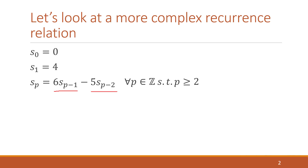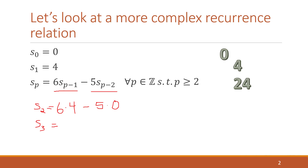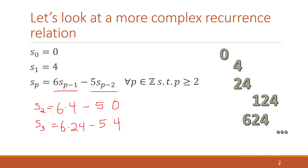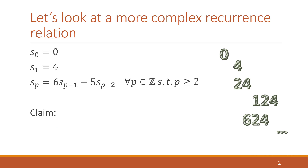If you work out the problems in this recurrence relation, we first have zero and then four from the base cases. Then for s(2), we have 6 times s(1), which is 6 times 4, minus 5 times s(0), which is zero, giving us 24. For s(3), we get 6 times 24 minus 5 times 4, which gives 124. The next one is 624, and so on — this is a very rapidly growing recurrence relation.